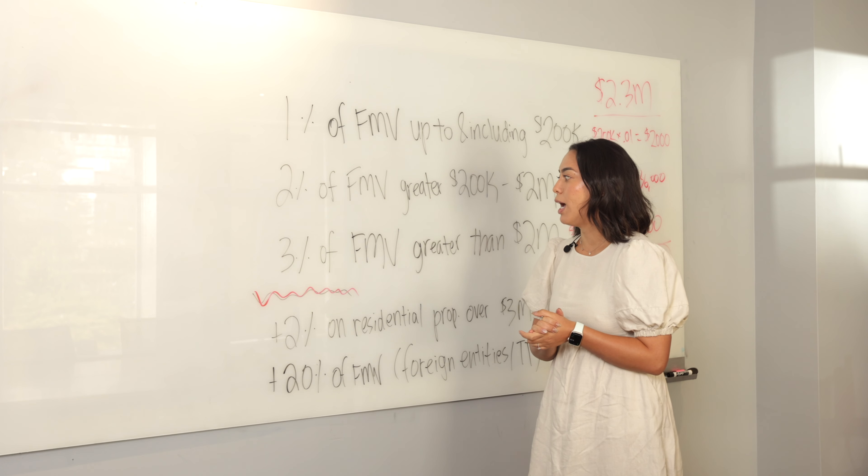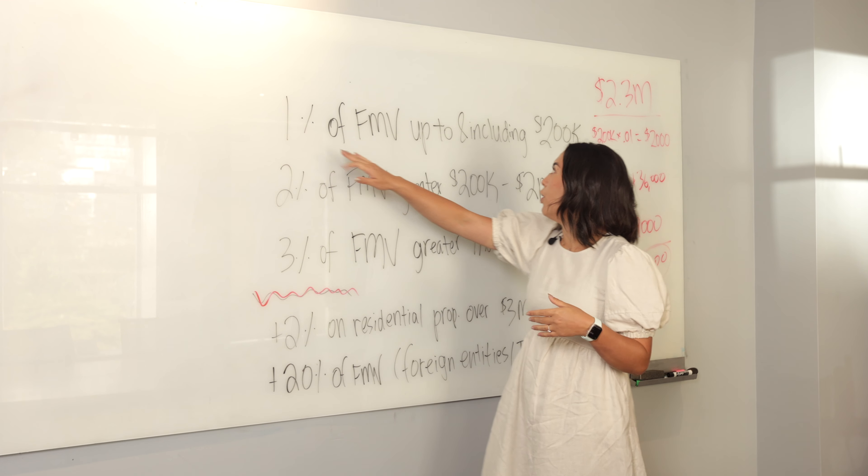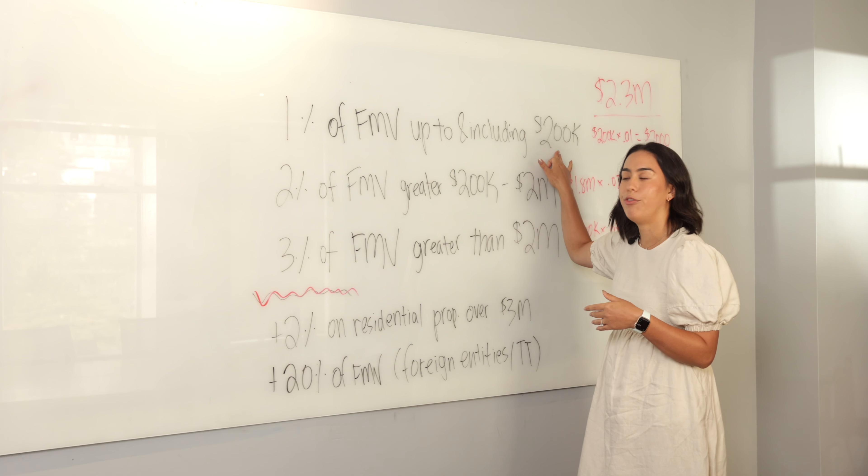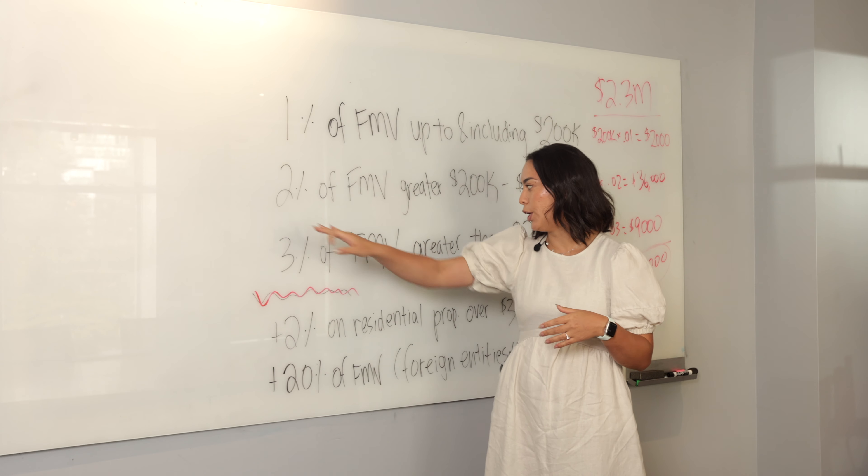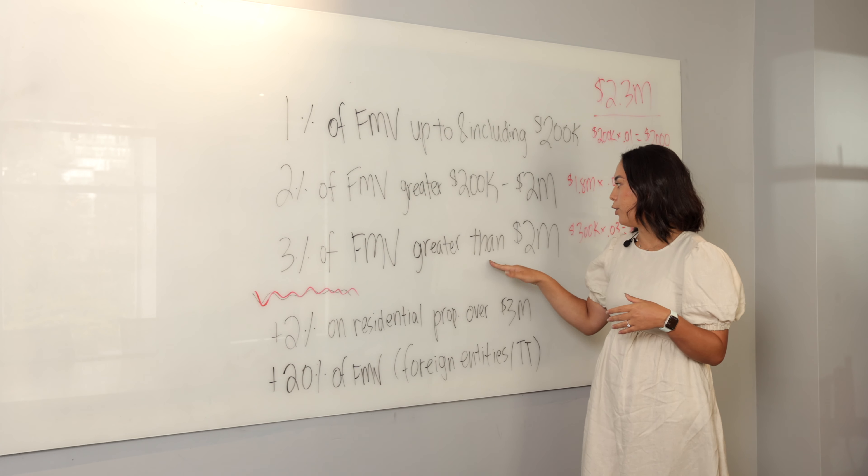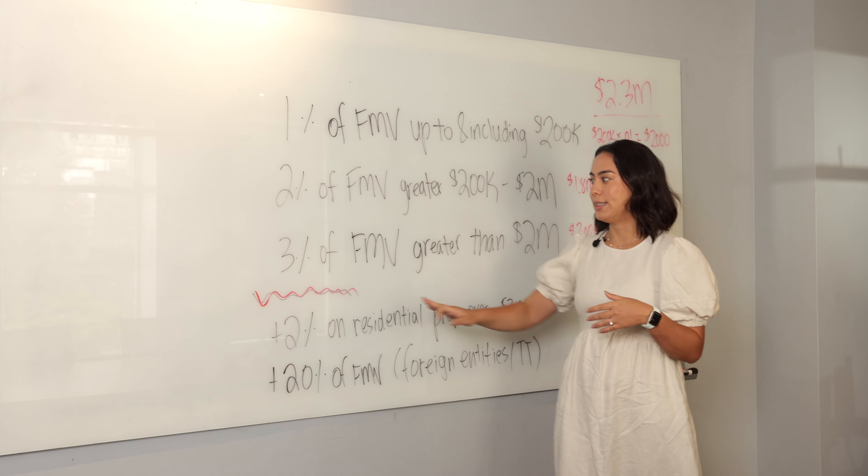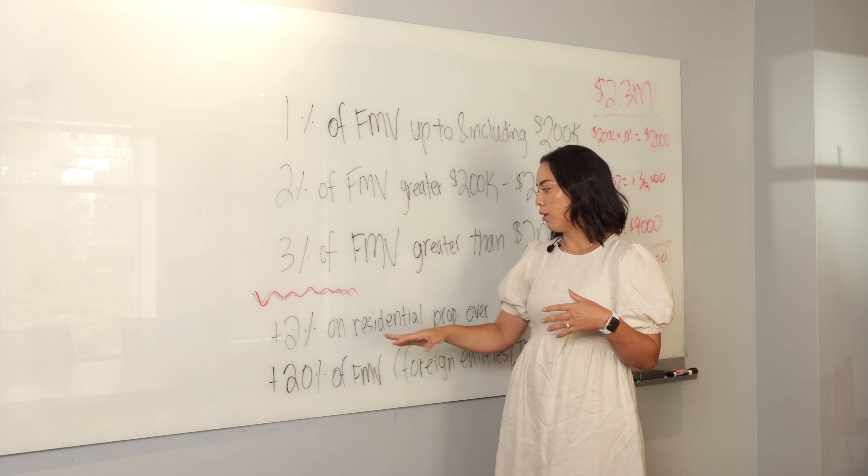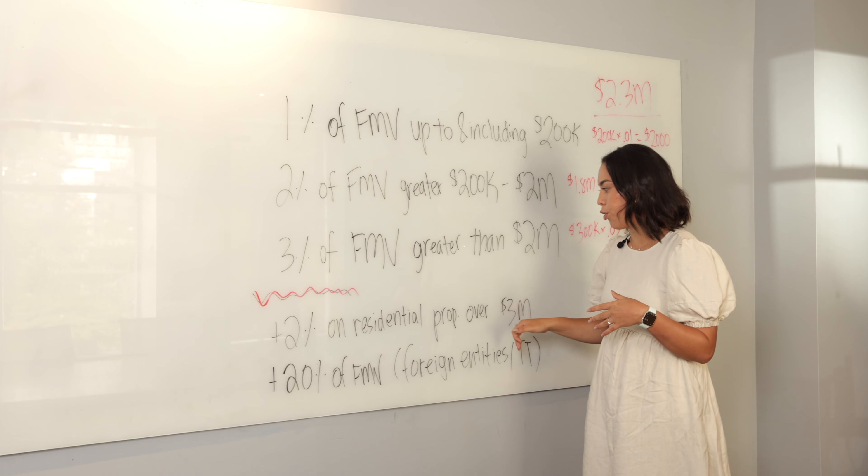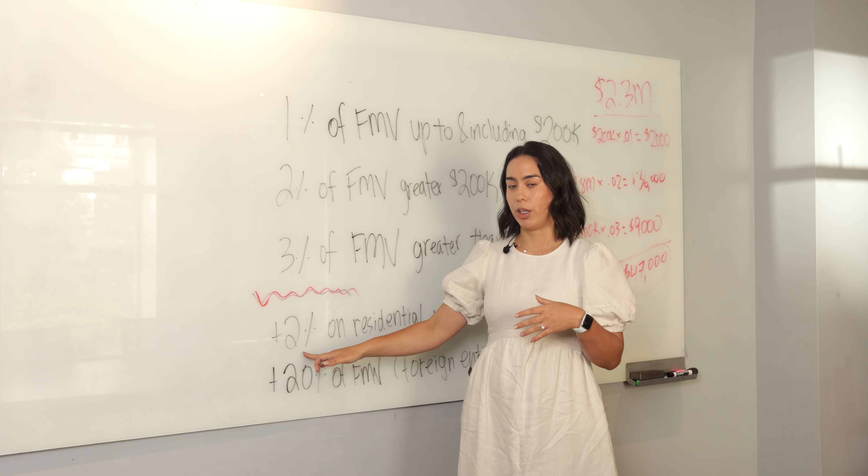We have to calculate it based on a sliding scale. It's 1% on the first $200,000 of fair market value. For the portion between $200,000 up to and including $2 million, it's 2% of the fair market value. Then for anything greater than $2 million, it's 3% of the fair market value. And just keep in mind that on residential property over $3 million, there's also an additional 2% calculation you'll have to take into consideration.